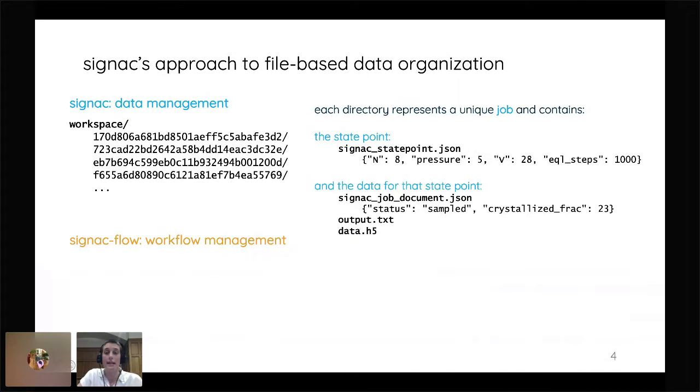And then in that same directory is all of the accompanying data for that state point. So you can have lightweight metadata and something we call the job document. And then you can have any file type, any extra data stored within that directory. So everything is just one directory deep, all belonging in the workspace. And each of them are guaranteed to be unique, because they're defined by these dictionaries that live in a single file called the SIGNAC state point JSON file. So that's our approach to managing your data space.